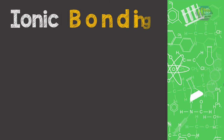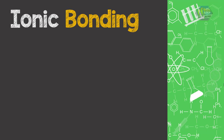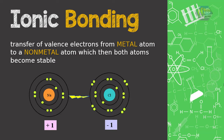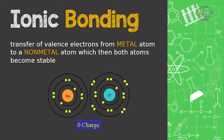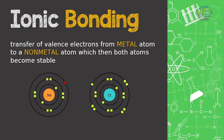Ionic bonding occurs between metal and non-metal atoms. It involves a transfer of valence electrons from a metal atom to a non-metal atom, which then allows both atoms to become stable.